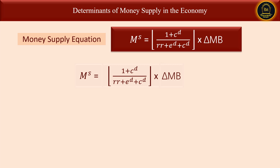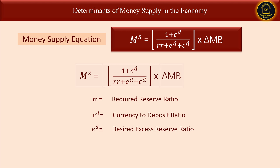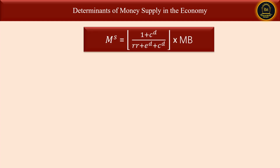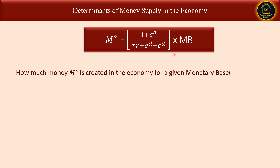In the first part of the equation — the money multiplier — RR stands for required reserve ratio, CD stands for currency to deposit ratio, and ED stands for desired excess reserve ratio. MB stands for monetary base. From this equation, we will try to find out how much money supply is created in the economy for a given monetary base.